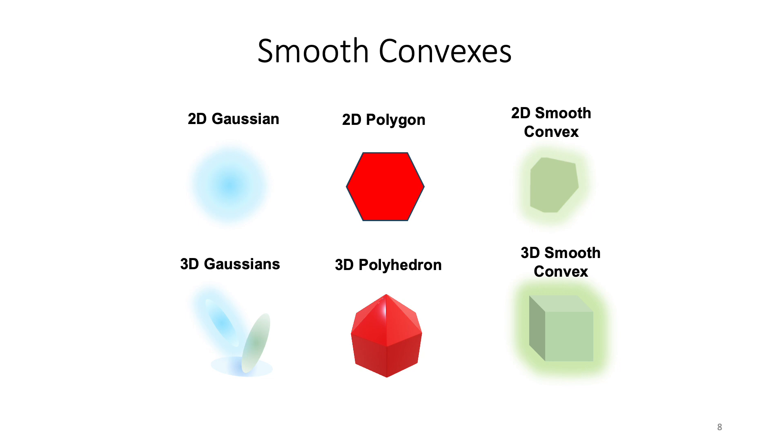So we can think of the smooth convexes are in the middle between, if you're looking at 2D smooth convexes, it's in the middle between 2D Gaussians and 2D polygon, since it has defined boundaries, but it also can include a transient effect of the Gaussians. And similarly, you can think about 3D smooth convexes as in the middle between 3D Gaussians and 3D polyhedron.